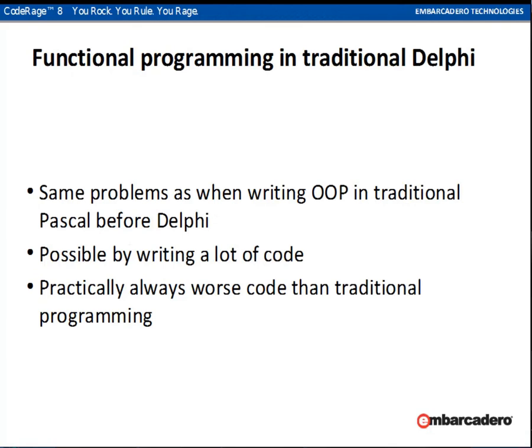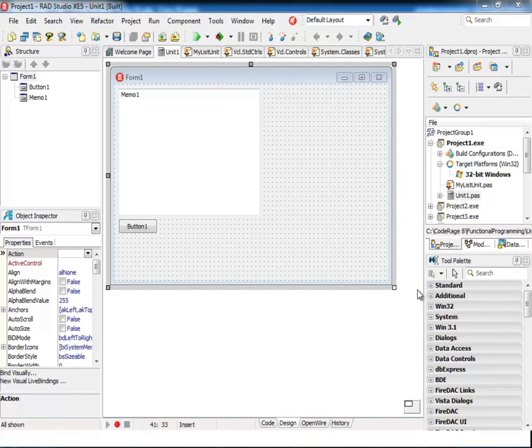We can do functional programming using traditional Delphi or any other procedural or object-oriented language. This language, however, will face the same type of problems we faced when trying to do object-oriented programming with structural languages. It is possible by writing a lot of code, and it practically always will produce worse code than in traditional programming. Obviously, it is not a practical solution when using traditional Delphi.